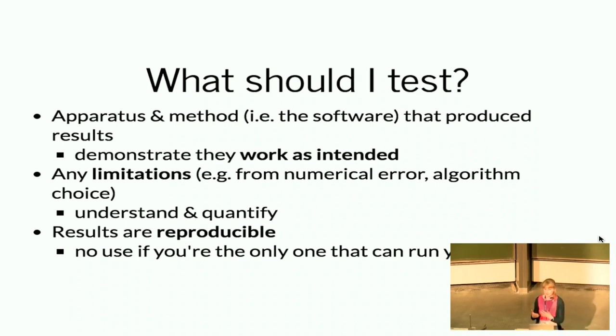We also need to understand limitations. So in experimental science you'll measure things like systematic errors, you'll measure whether there's any noise in your detector maybe. So we should be looking to see if we have numerical error. So if you're doing floating point computations, if you're adding 1 to 1 to 10 to 30, then it's not going to be necessarily what you expect it to be and we should really understand this. Also we need to understand that if we use an algorithm it will have a certain accuracy and we need to really quantify and understand this when we publish our results.